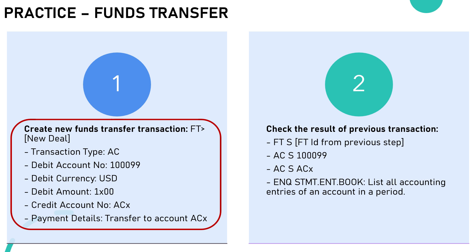Let's practice together to understand how to create a basic money transfer transaction between two accounts on the Funds Transfer module. Practice Scenario 1: Creating a Basic Funds Transfer Transaction. Transaction Type is AC (Account-to-Account Transfer), Debit Account Number is 100099, Debit Currency is USD, Debit Amount is $100, Credit Account Number is ACX, and Payment Details is 'Transfer to Account ACX'.